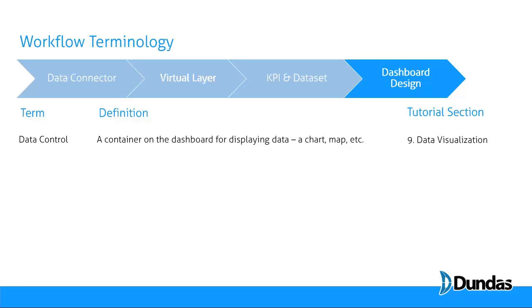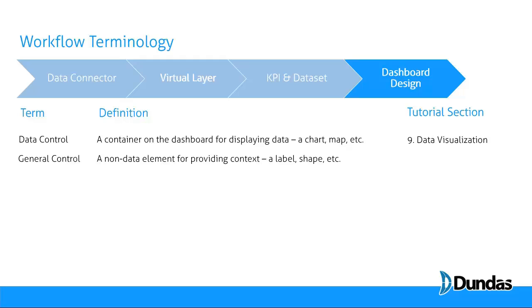A few other things you can use while designing a dashboard: you'll need to understand what a data control is. This is a container on the dashboard that displays data. If you're building a chart, map, or gauge, you'll use a data control and put a KPI inside it, covered in Section 9. There are also general controls — non-data elements for providing context, such as labels, shapes, and frames, briefly touched on in Section 9.